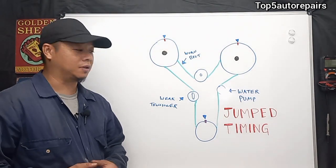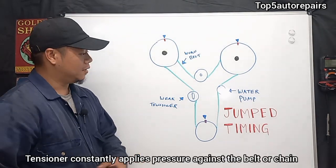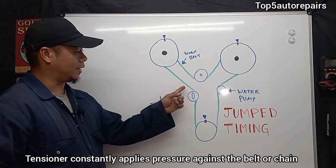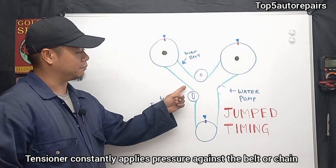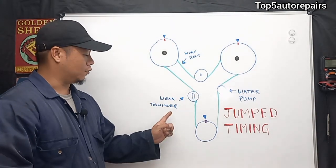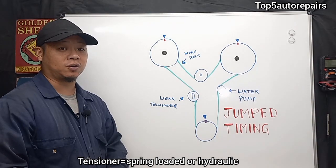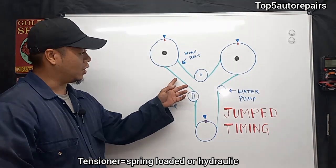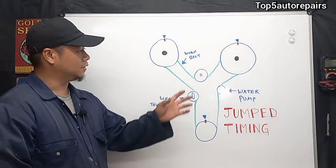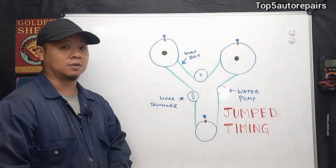So there are a lot of factors that can cause timing to jump, and maybe one of the most common ones is going to be a weak tensioner. Basically, the tensioner constantly applies tension against the belt or the timing chain. And when the tensioner is weak, normally it's either spring-loaded or hydraulic, it will cause the belt and the chain to jump under load.